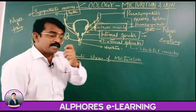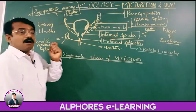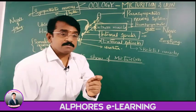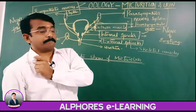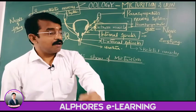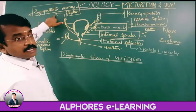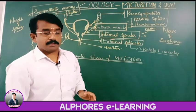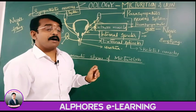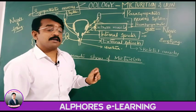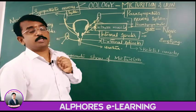The somatic nervous system is a voluntary nervous system; the autonomic nervous system is involuntary. The autonomic nervous system is again divided into sympathetic and parasympathetic, which are antagonistic to each other.